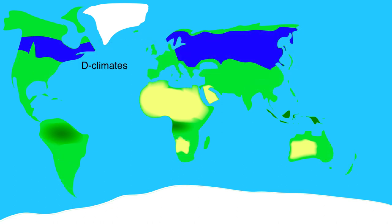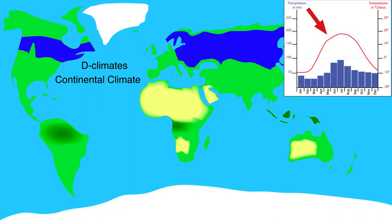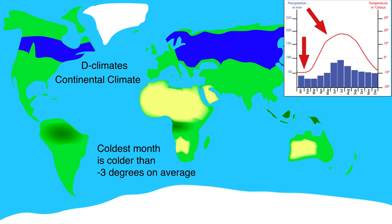Inland we find D climates. The effect of the sea is lacking here, and that is why we call them continental climates. This means that the summers are hotter than in sea climates because there is no cooling air. Because in cold winters no warmer sea air reaches these places, the winters also become very cold. That is why we distinguish D climates by setting an average temperature of no more than 3 degrees below zero for the coldest month.